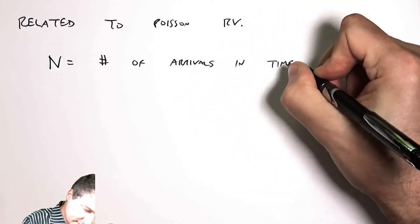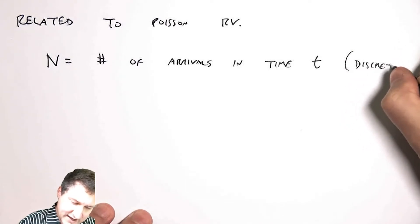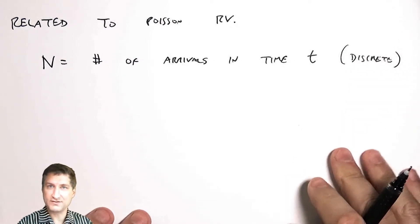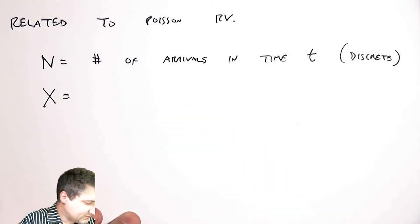This is a discrete random variable because I can only have an integer number of arrivals.